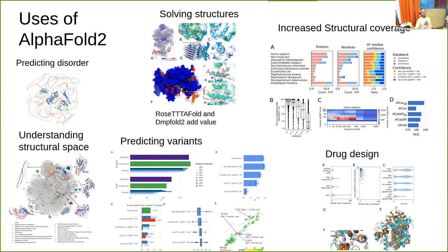AlphaFold is probably most importantly used as input for solving other structures — as input to low-resolution cryo-EM models or other data types, where it helps a lot. It's also very good at predicting disorder: if you have an unreliable prediction with yellow regions, those are likely disordered. It has dramatically increased structure coverage — we know the structure of many more large protein families than before. We can use it for predicting effects of variants by combining with other programs, and for drug design, because models are good enough to dock small molecules into them.